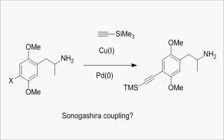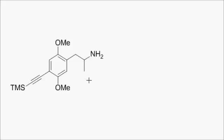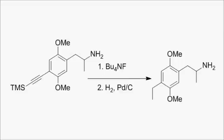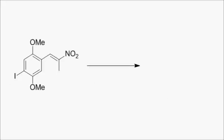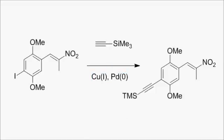A better alternative would be to use the commercially available trimethylsilyl acetylene, performing a Sonogashira terminal alkyne cross-coupling with an in-situ generated copper acetylide. Deprotection of the trimethylsilyl group should be easy with TBAF or methanolic potassium hydroxide, and the hydrogenation of an alkyne to an ethyl group would be straightforward with hydrogen and palladium on carbon. If the amine proved to be problematic with the cross-coupling, there's always the option of doing it before the reduction using the iodoaldehyde from earlier.